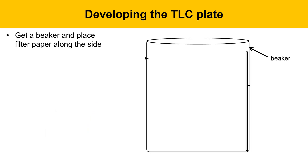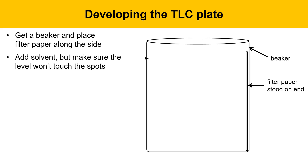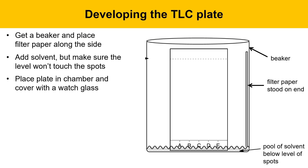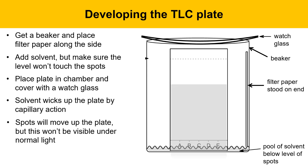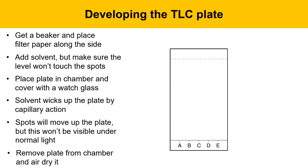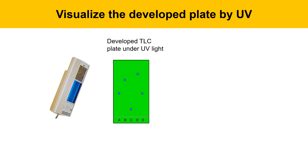To develop the plate, get a beaker and place filter paper along the side — this functions as a wick for solvent and keeps the atmosphere inside the developing chamber saturated with solvent vapor. Add solvent, but make sure the solvent level won't touch the spots, so it needs to be a shallow pool below the level of the spots. Place the plate in the chamber and cover it with a watch glass to keep the solvent from evaporating. The solvent will wick up the plate by capillary action and the spots will move up, though this won't be visible under normal light. Remove the plate and allow it to air dry.